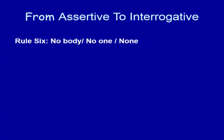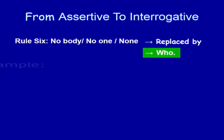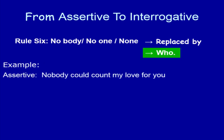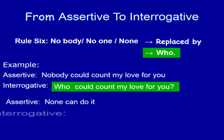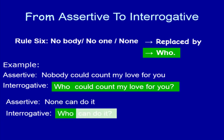Rule number 6. Nobody, No one, None — replaced by 'Who.' Look at the example. In an assertive sentence starting with nobody, no one, or none, write 'Who' in place of 'nobody.' Then write the rest part of the sentence without any change. After the sentence, use the sign of interrogation. Another example: 'None can do it.' In place of 'none,' use 'Who,' then write the rest part of the sentence. After the sentence, use the sign of interrogation.